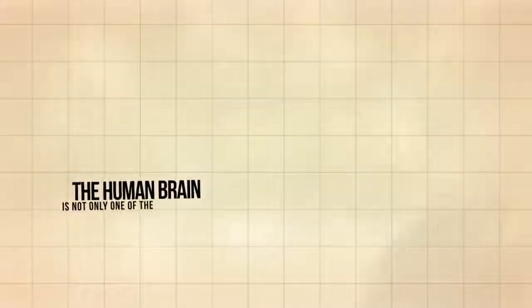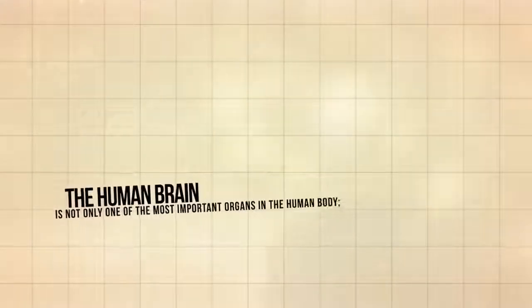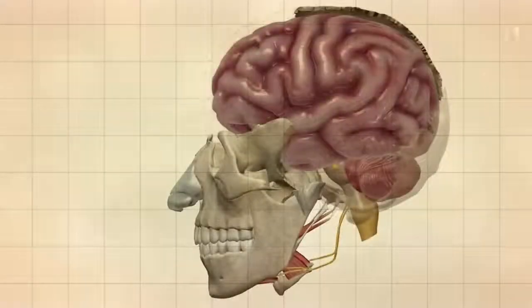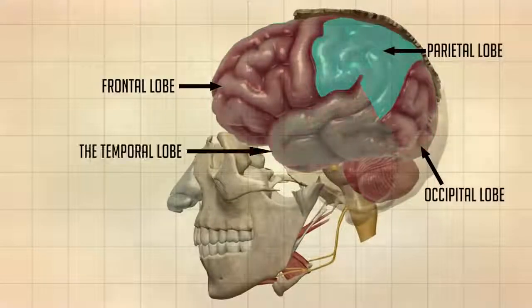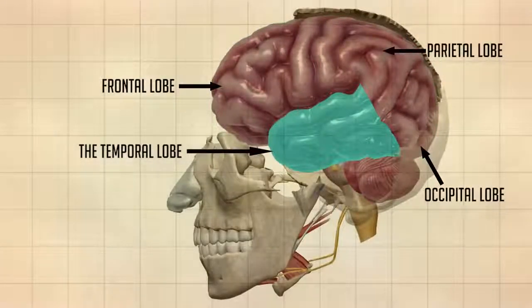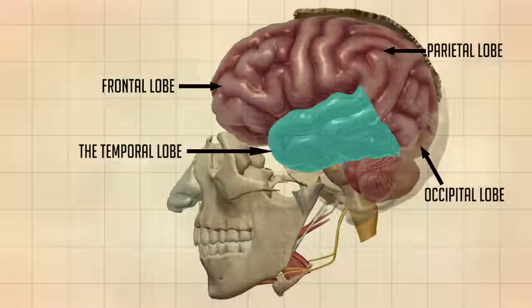The human brain is not only one of the most important organs in the human body, it is also the most complex. The brain is divided into four major sections known as lobes: the frontal lobe, the occipital lobe, the parietal lobe, and the temporal lobe have different locations and functions that support the response and actions of the human body.